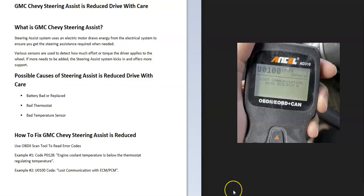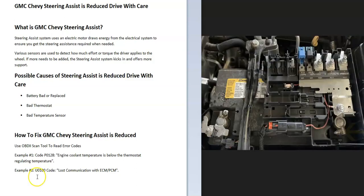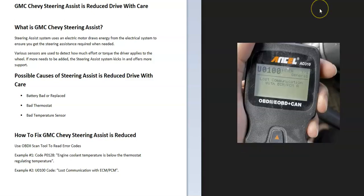Another common code is U0100, which indicates lost communication with the ECM or PCM. When you get a lost communication error code, it's commonly caused by a dead or recently replaced battery. Usually you just need to replace the battery, clear the codes, and the problem will go away. The first step is always to read the onboard computer error codes — there are low-cost OBD2 scan tools, or you can call an automotive store to scan for free.